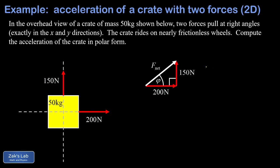F net is given by the length of the hypotenuse here, so we just use the Pythagorean theorem to get that. So F net is given by the square root of the sum of the squares of these two legs, so it's going to be the square root of 200 squared plus 150 squared. And when we run the numbers on this, we get exactly 250 newtons for the length of that hypotenuse.